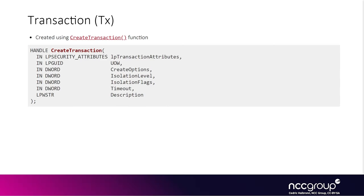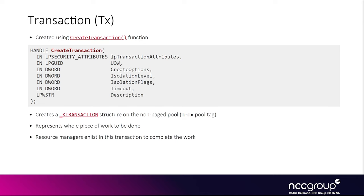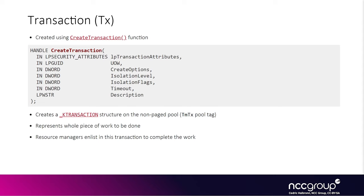A transaction structure is kind of what you deal with at the very beginning. When you say you are going to do some work, you need to create a transaction. There is a CreateTransaction API which allows you to create a transaction and gives you back a handle to it. On the kernel side, there is a KTransaction structure. By reverse engineering and debugging, you can realize the transaction is allocated on the non-paged pool and it has a specific pool tag, TMTX, which can be useful when poking around in memory with WinDBG. The convention is to have the TM prefix to indicate it is in the KTM kernel component, and then a suffix to indicate the type of the object — so for a transaction, they use TX, giving us the TMTX pool tag.